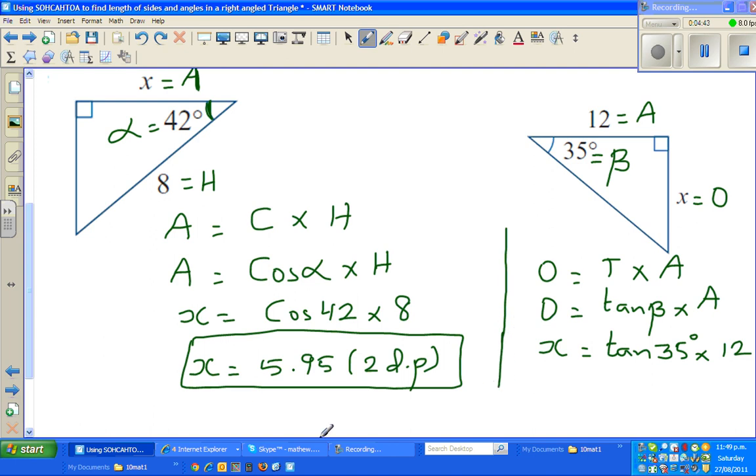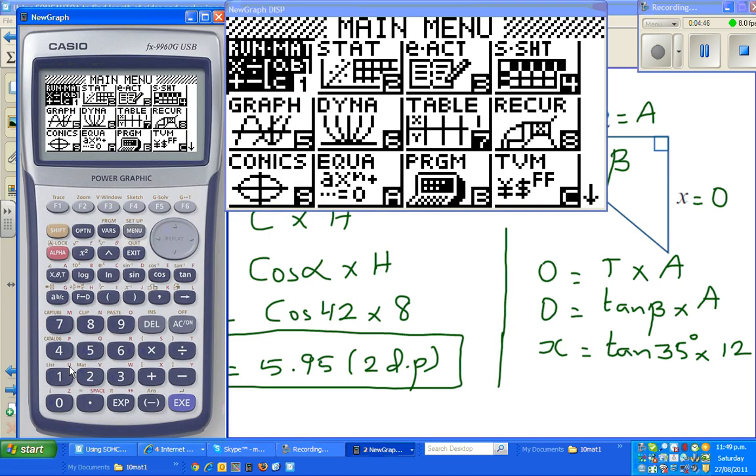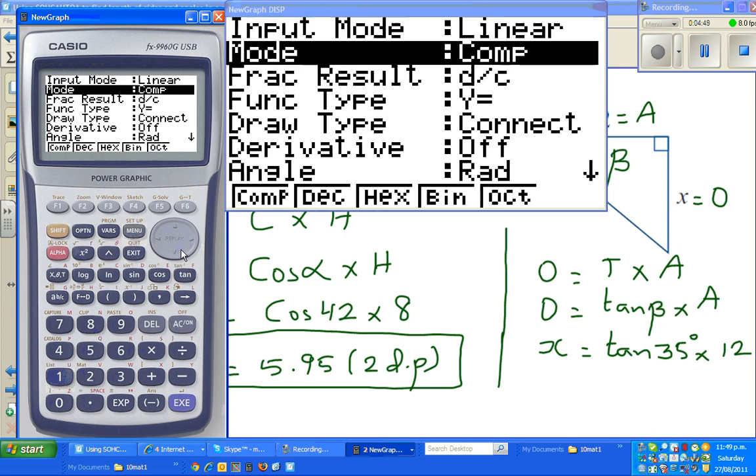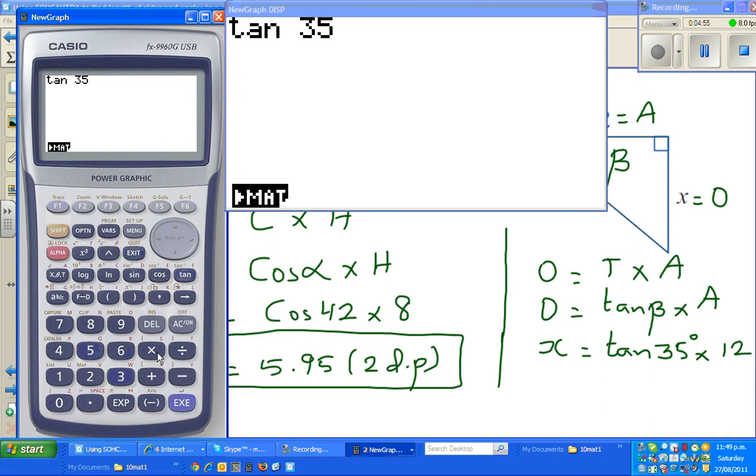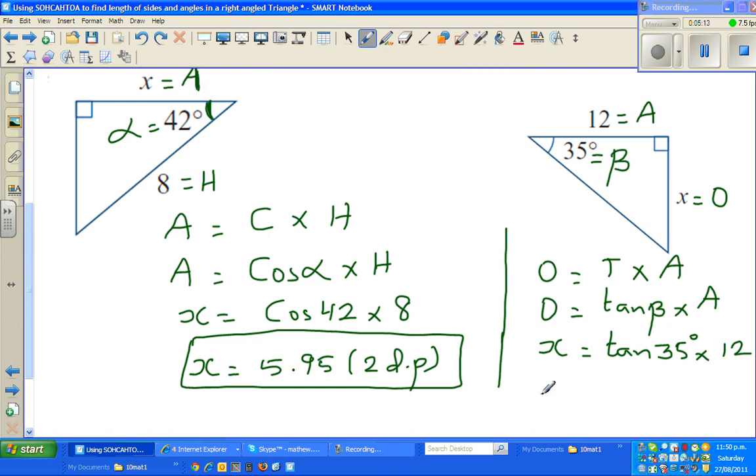So let me get the calculator out. Again, I have to change the setting to degrees. So menu, degrees, and then tan 35 times 12. It will give me the answer, which is 8.40. Because here, the third decimal place is 2, so you don't have to do anything to the second decimal place. But you have to write the 0, because you are rounding to the second decimal place. So X is 8.40. We are writing 0 because we are rounding it to the second decimal place.